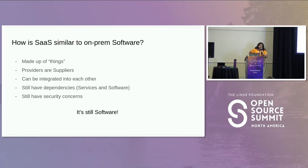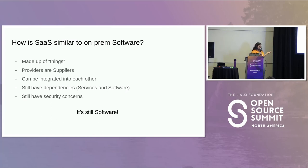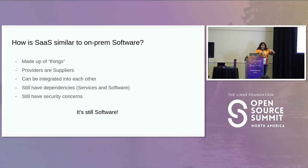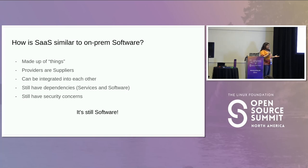Let's move on to how SaaS is similar to on-prem software. The bottom line: it's still software, still made up of things, there are still components, providers can be considered suppliers, and they can integrate with each other. They still have dependencies — if you're using a service, that service may be using another service, so there's definitely a dependency graph. And there are still security concerns. In the SaaS environment this looks very much like an old-school bill of materials with business relationships and contracts with suppliers — just replace suppliers with providers and you get a SaaS BOM.